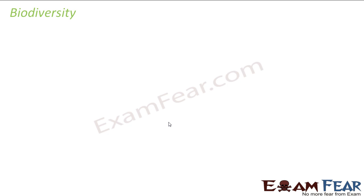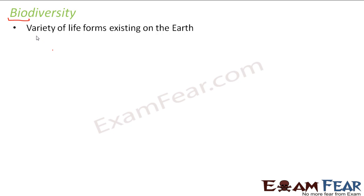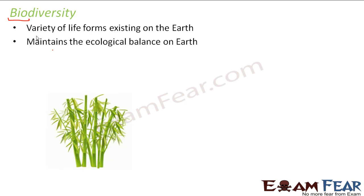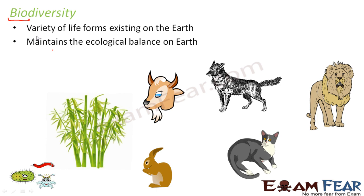When I talk about life, biodiversity becomes a very important word. Bio means life and diversity means variety, so the variety of life forms existing on earth is known as biodiversity. Now, why is biodiversity important? Why do we think that different types of life forms should exist on earth?